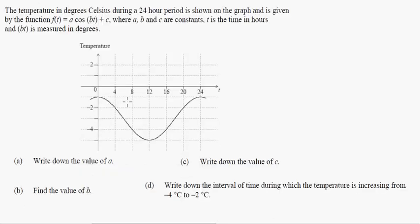Let's look at this problem. It says the temperature in degrees Celsius during a 24-hour period is shown on the graph and is given by the function F(T) = A cos(BT) + C, where A, B, and C are constants, T is the time in hours, and BT is measured in degrees. This is a very typical problem. You'll have to figure out what A, B, and C are.